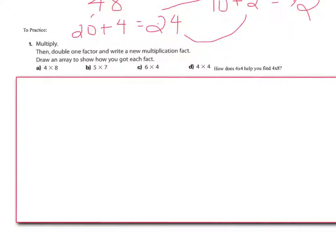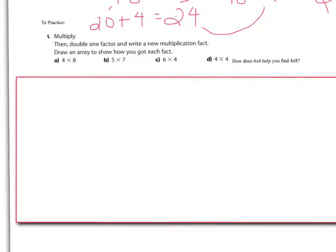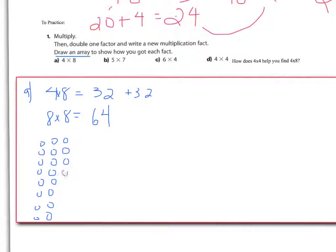All right, to practice. Multiply, then double one factor, and write a new multiplication fact. Draw an array. So, we'll do the first one together, just in case you're not sure how to do this one. A, so it wants you to take this and figure out what it is. 4 times 8. Well, 4 times 8 is 32. If I want to double that, I could go 8 times 8. Well, that really just means 32 plus 32. Well, 30 plus 30 is 60. 2 plus 2 is 4. It's 64. We could draw an array, and an array is the picture. So, we're going to start with 4 groups of 8. I need 4 groups of that.